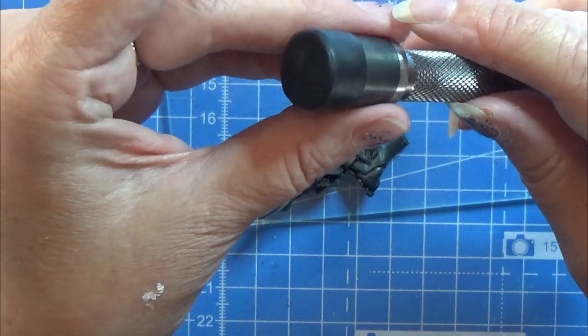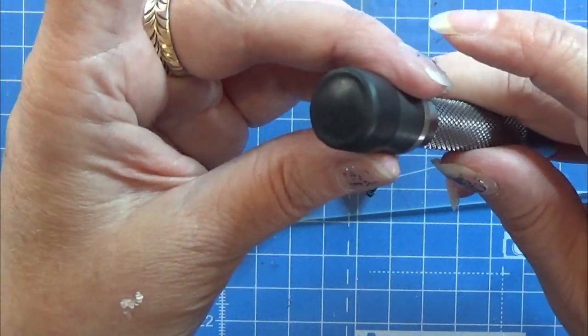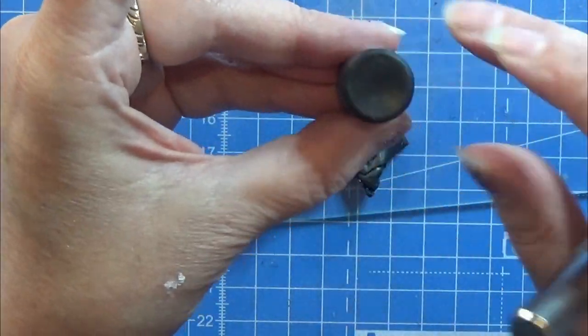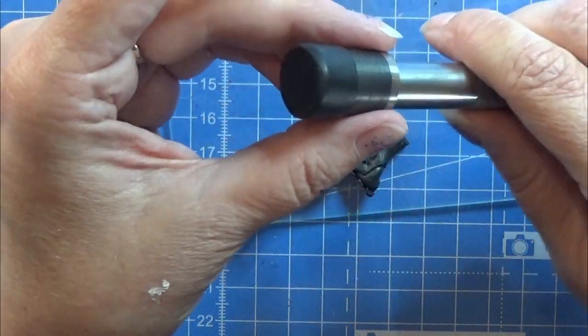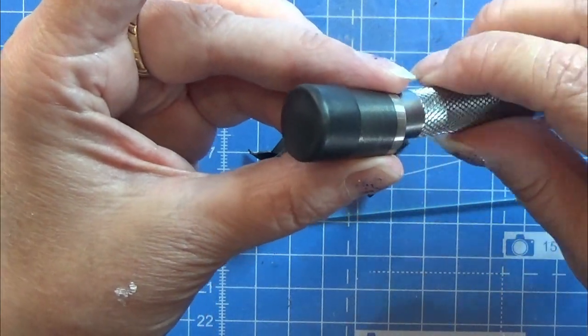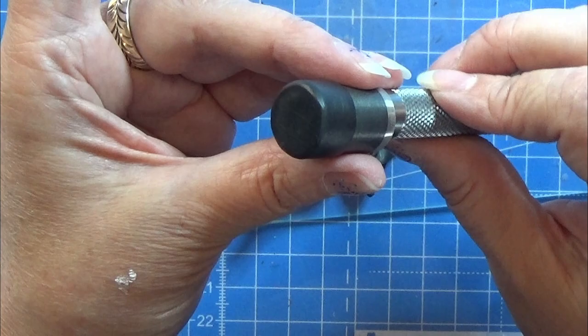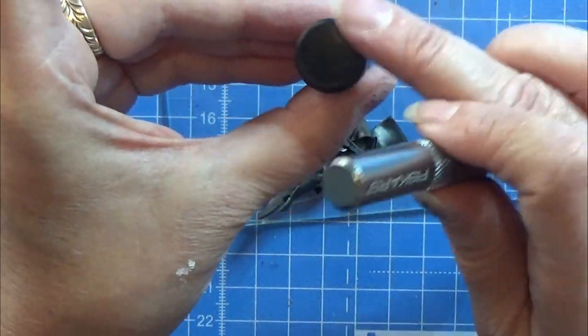The bottom part here kind of fell in so I'm using this tool to push it out again. And I'm just playing around with it until it's as flat as I want it to be. And then I am placing it to the side, ready for the baking.